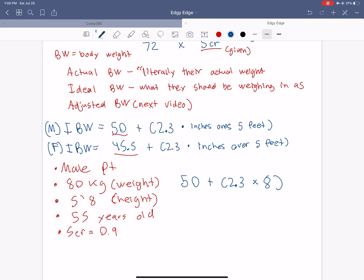And then we will then do a quick calculation. And let's see. 2.3 times 8 plus 50 is 68.4. So 68.4 kilograms. So this is his ideal body weight. So this is how much he should be weighing in as based off his height. But he's actually weighing 80 kilograms.